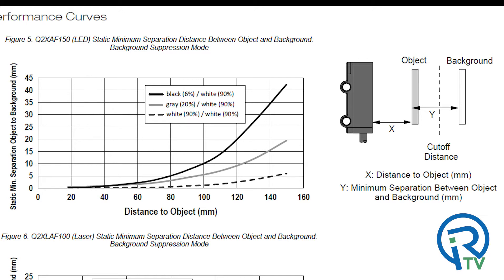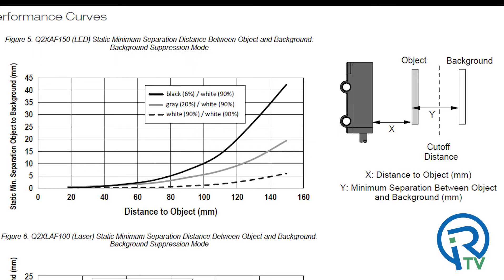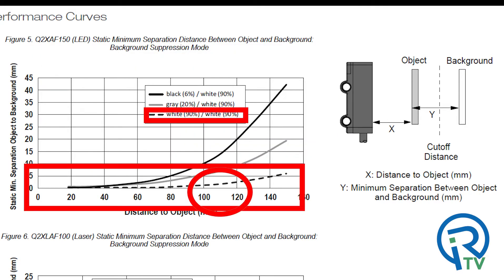Say for an example, I have an application where the target and the background is the same material. For instance, maybe the application is on a bottle cap feeder and you want to ensure that a white cap is flipped the correct way. If the difference between the top and bottom of the cap is more than say five or six millimeters, you should be able to place the LED version of the sensor at say 100 to 120 millimeter sensing distance and be able to detect the proper orientation of the cap.